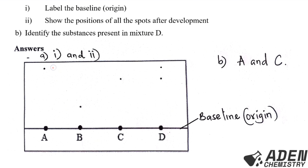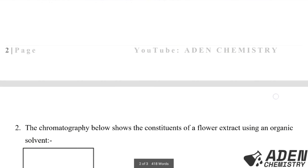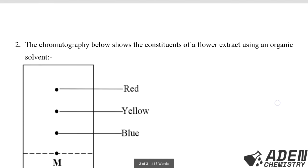So the answers for question one are: part A(i) — label the baseline or origin; part A(ii) — show the positions of all spots after development, which we have shown. Part B — the substances present in mixture D are A and C, because they moved the same distances as D's two spots.